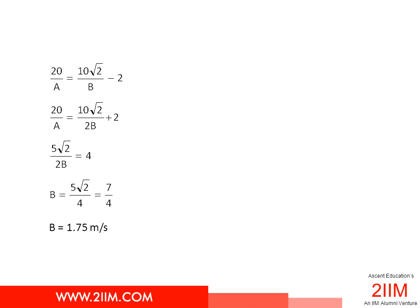The first equation, as we saw, was 20 by A equals 10 root 2 by B minus 2. All we are doing is distance 1 by speed 1 equals distance 2 by speed 2 minus 2 because A reaches 2 seconds sooner than B.